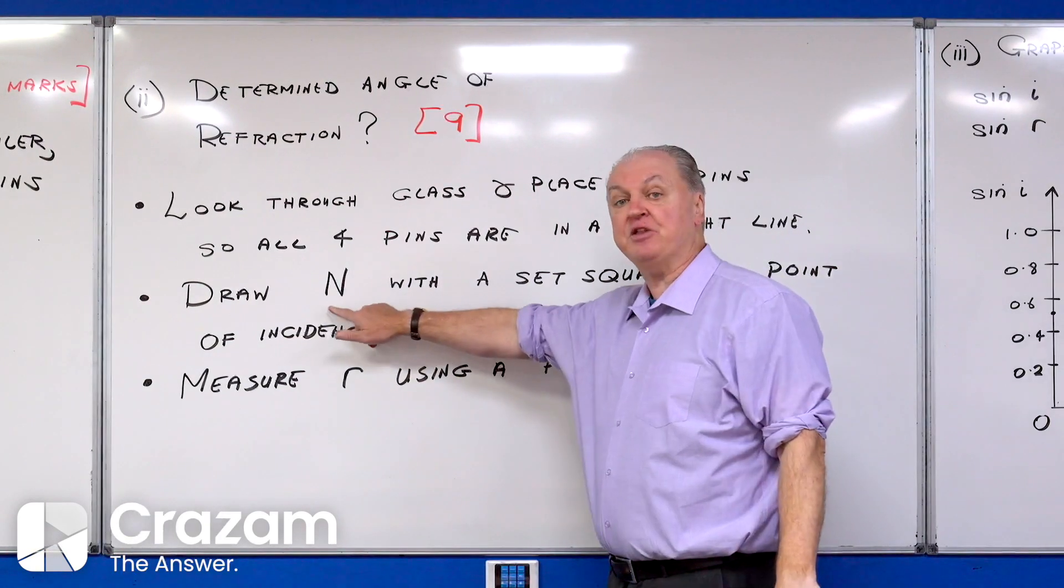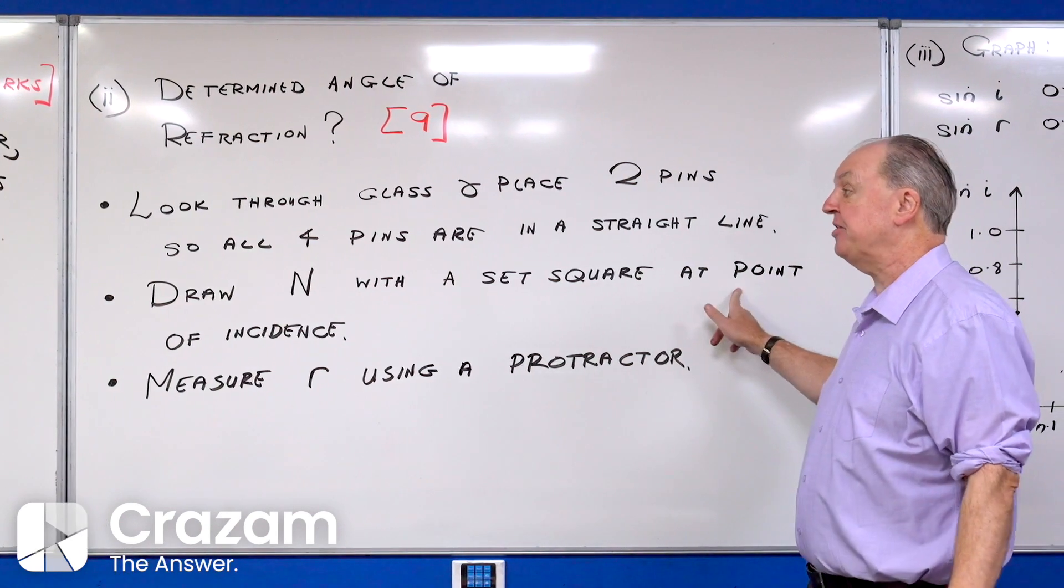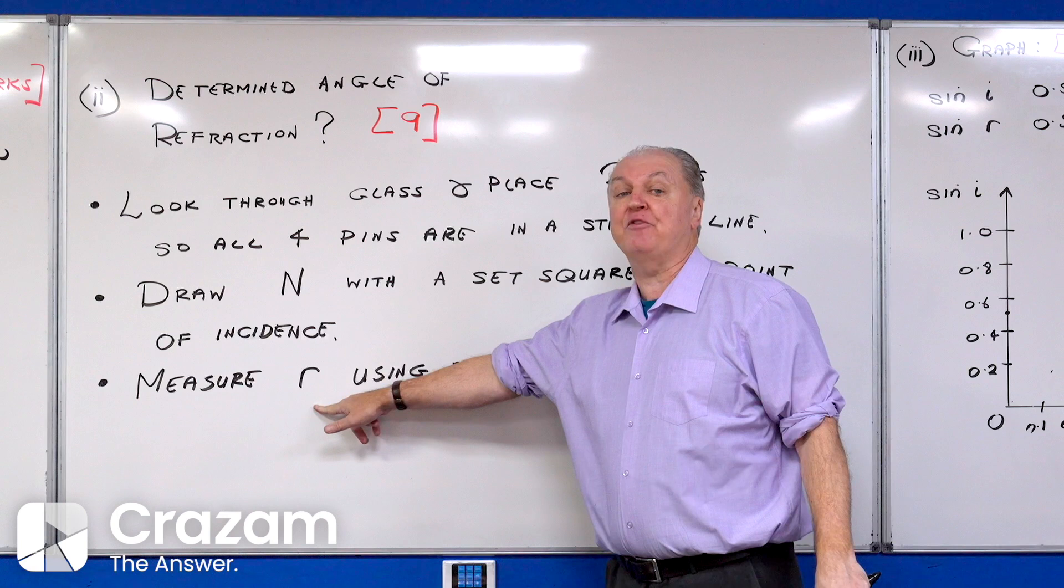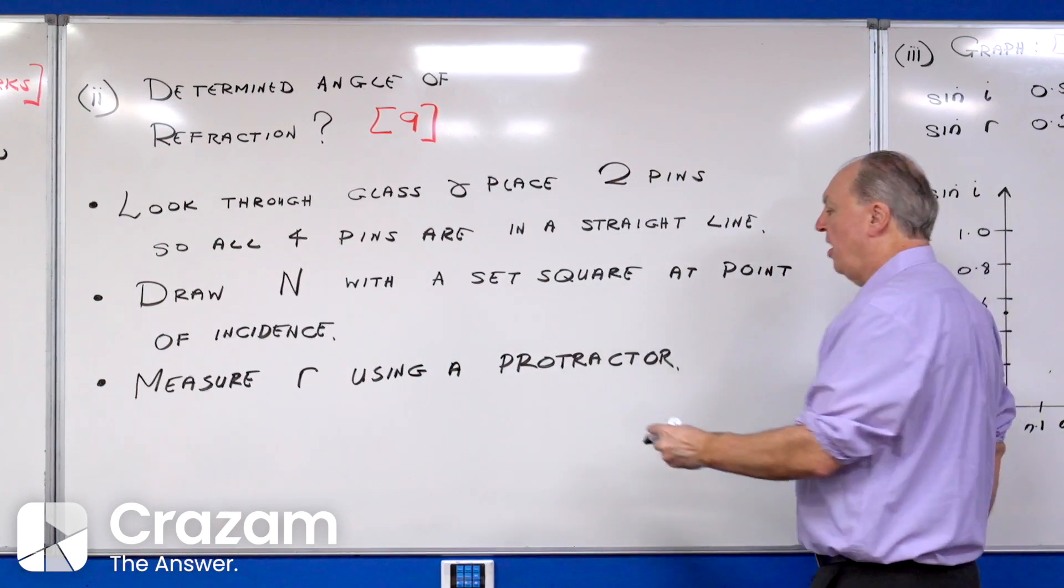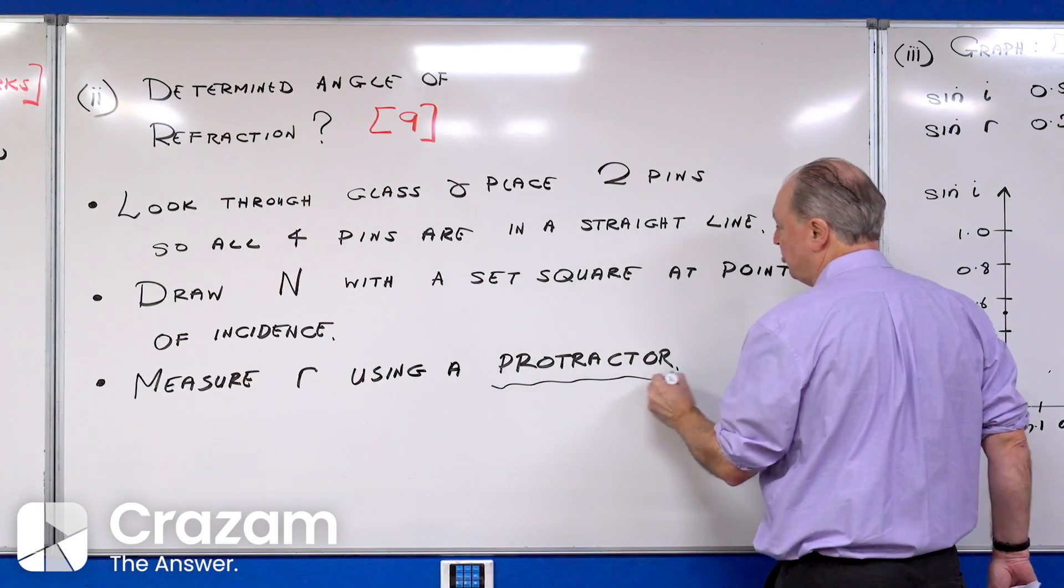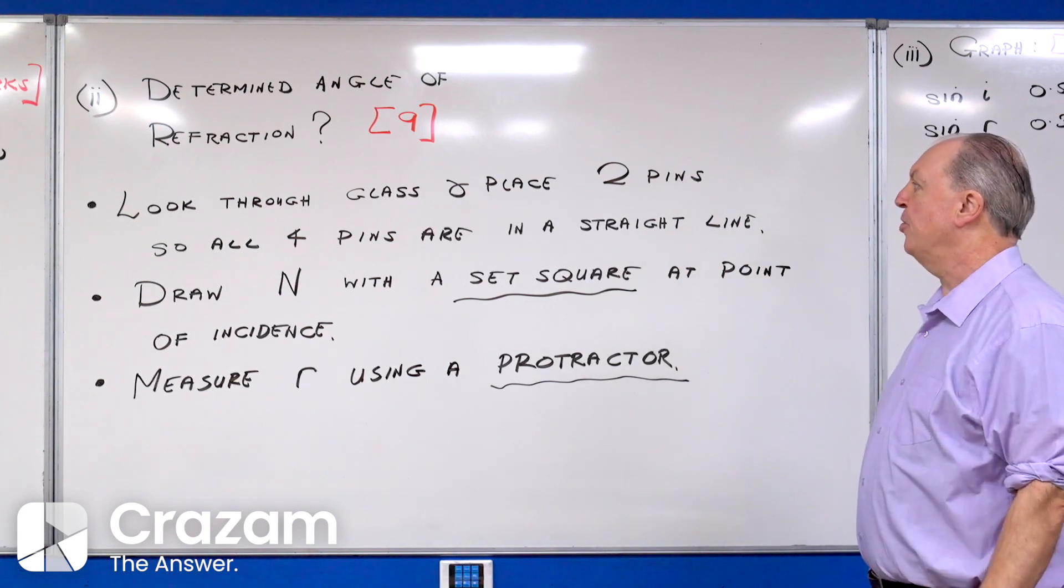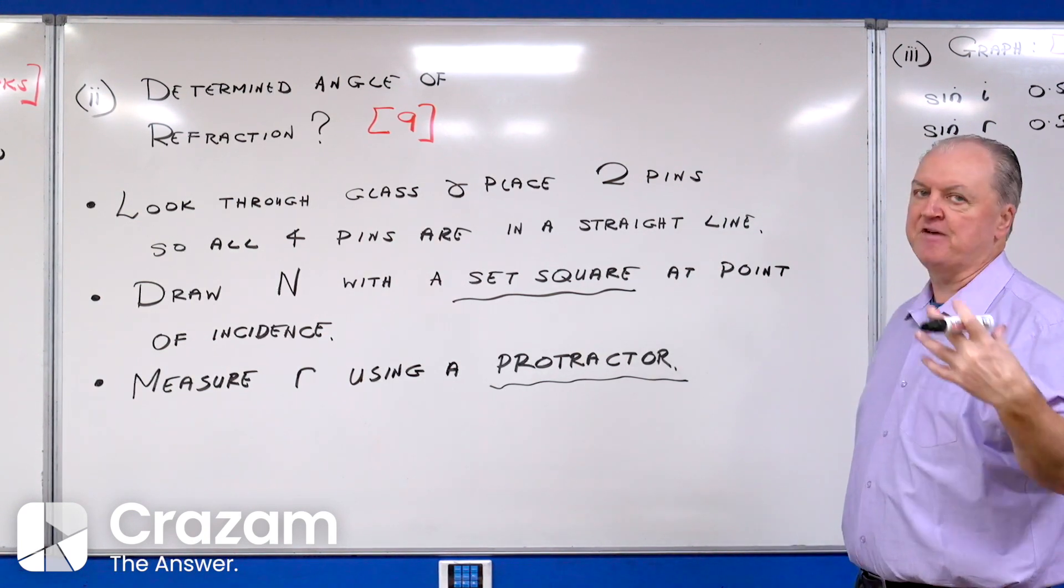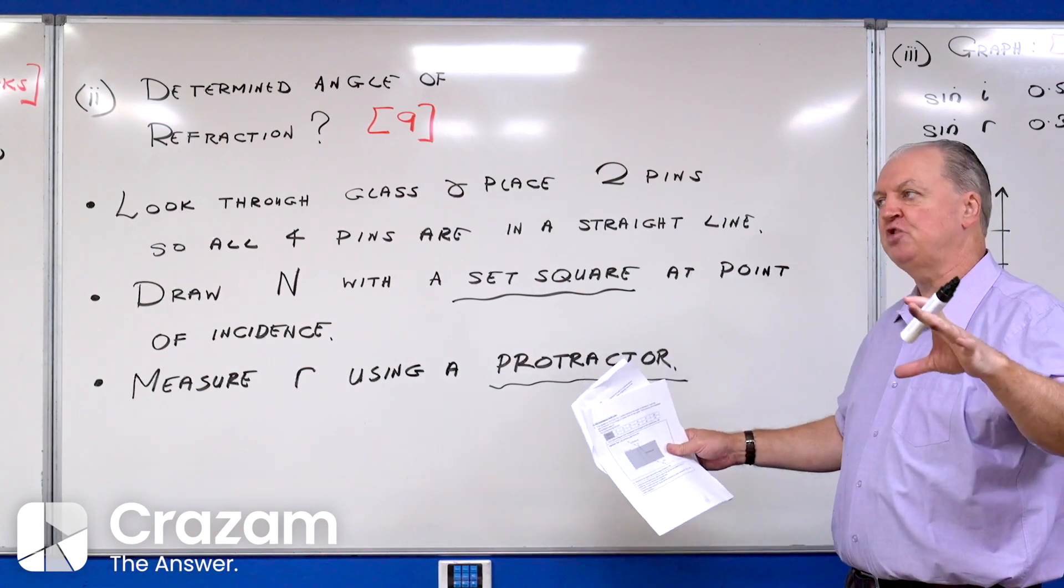I draw n, that's the normal, with the set square at the point of incidence, and then I'll measure r, that's the angle of refraction, using a protractor. Anytime you measure something or draw something, always say what you do it with: protractor, set square, and so on. Nine marks for saying how I determined the angle of refraction.